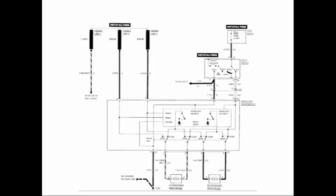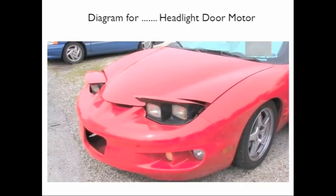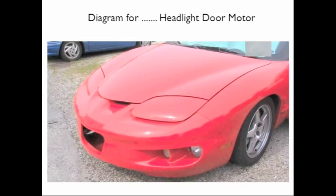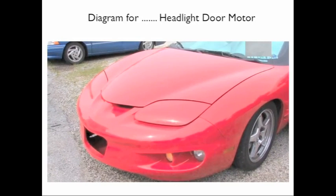Now we're looking at a new diagram here. This is for a headlight door module — it's for an 89 Pontiac Trans Am with a 5.7 engine. These headlights, when you turn the headlight switch, not only turn the bulbs on but they actually have a motor that opens and closes the cover. So it's the diagram for the headlight door motor.